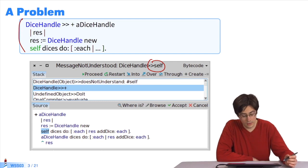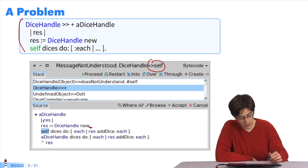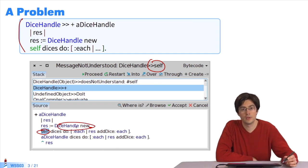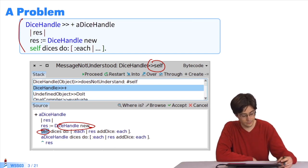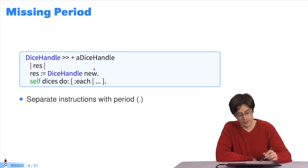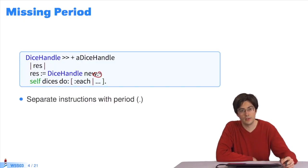Taking a little look at it, we see there's a period missing, and so the execution is happening as though self was a message sent as a result of DiceHandle new. Since the DiceHandle class doesn't have a self method, the debugger opens. So the solution is to add this period at the end of the first line.